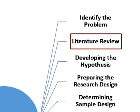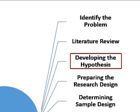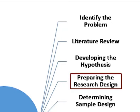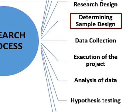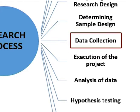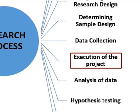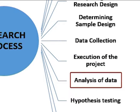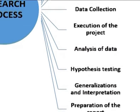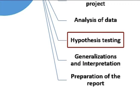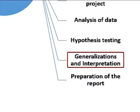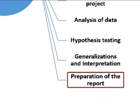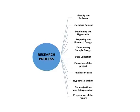Second one is literature review. Third is developing the hypothesis. Fourth one is preparing the research design. Fifth is determining the sample design. Sixth one is data collection. Seventh, execution of the project. Eighth one is analysis of data. Ninth is hypothesis testing. Tenth one is generalizations and interpretation. And the last one is preparation of the report. A brief description of the above stated steps will be explained below.